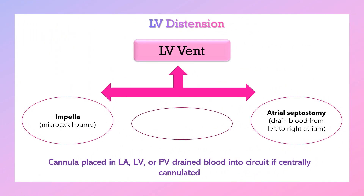If left ventricular distension persists and previous non-invasive measures have failed, we will go for left ventricular venting. We may use an Impella, which is a micro-axial pump taking blood from the left ventricle through the aortic valve to the ascending aorta, or using an intra-aortic balloon or atrial septostomy which drains blood from the left atrium to the right atrium. A cannula can be placed in the left atrium, left ventricle, or pulmonary vein to drain blood into the circuit if centrally cannulated.